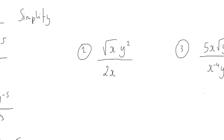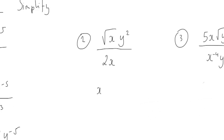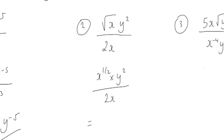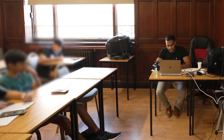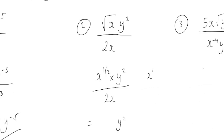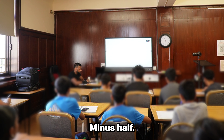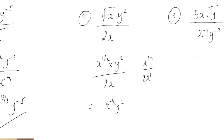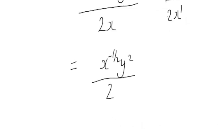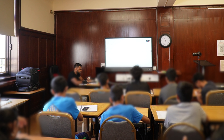Second example. How do I write root x? I write it as x to the power of half, times y squared, over 2x. There's nothing I can do with the y's — y squared stays the same because there's no other y to simplify. Now x to the power of half divided by 2x: I have to subtract half by one, because x without a written power is x to the power of one. So half minus one is minus half. The two stays on the bottom. Answer: x to the power of minus half, y squared over 2.